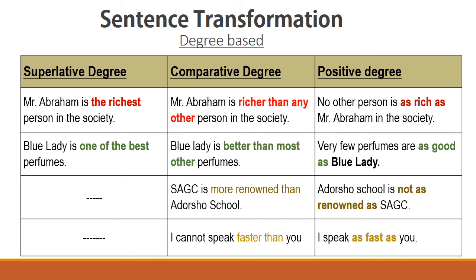Another example: 'I cannot speak faster than you.' This means you speak faster than me — or alternatively, we both speak at the same speed. So the positive degree can be: 'I speak as fast as you,' meaning our speaking speed is the same.